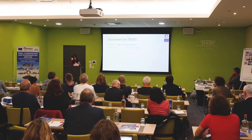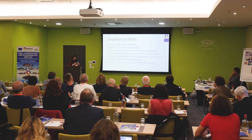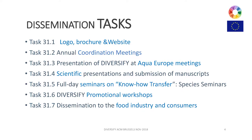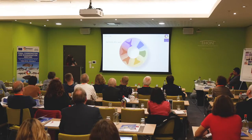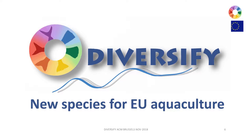We have seven important dissemination tasks, with a lot of work in each of them. The first one, very important, was our nice logo. I think all of you agree we have a lovely logo — thanks to Car André from IRTA. This logo evolved later when we added our motto: 'New Species for EU Aquaculture.' Since then, we combine the project name, the nice tail logo, and our sentence.